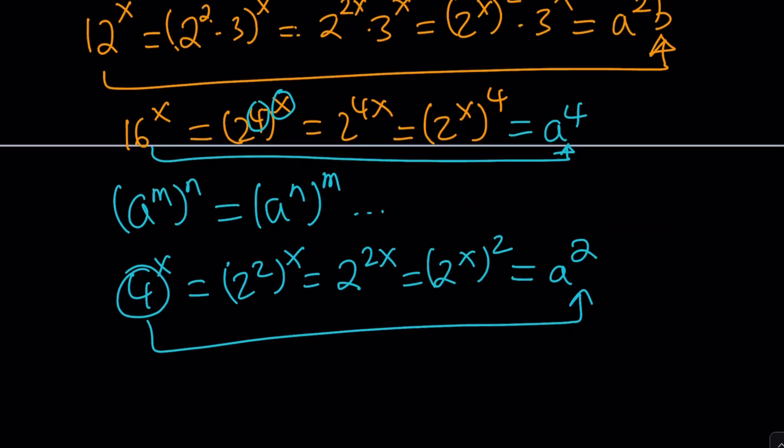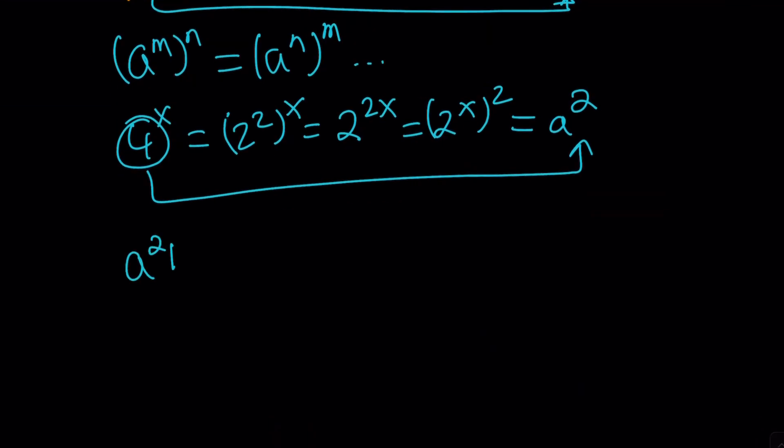So I think we got everything we need. Let's go ahead and make the replacements. 12 to the x is going to be a squared b minus 16 to the x is just going to be a to the 4th. And then we have this under the radical equals 3 to the x, which is b, minus a squared, which is 4 to the power x. Great. Now we got our expression in terms of a and b. Now, obviously there are two variables, so it's a little problematic because we had a single variable. Now we have two variables. But don't worry, those are related.